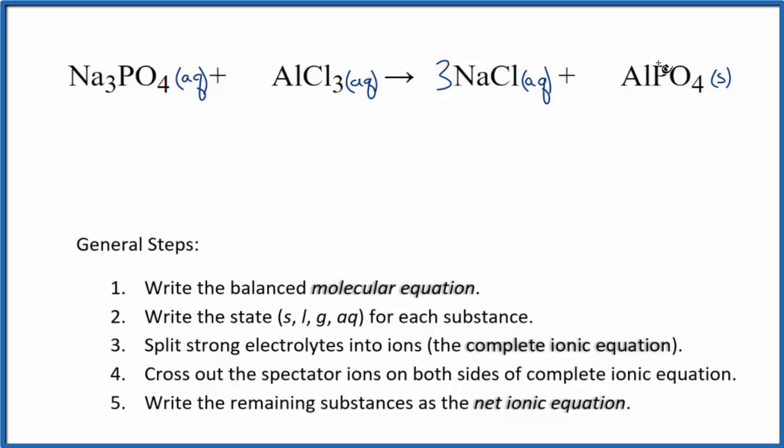Once we have the states we can split the strong electrolytes into their ions and this will give us the complete ionic equation. On the periodic table, sodium has a 1+ ionic charge and the phosphate, the whole thing, is 3-. Good one to know. So we have three sodium ions and I won't write the states right now, let's write that at the end. I have the phosphate ion here, that PO4 3-.